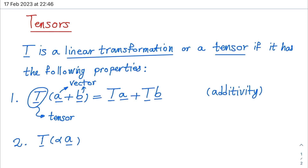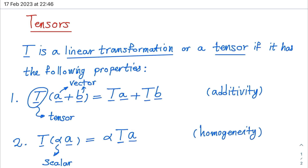Transformation of alpha A is equal to alpha transformation of A. This property is known as homogeneity. In other words, the effect of the transformation on a scaled vector is equal to the scaling of the effect of the transformation on the vector.